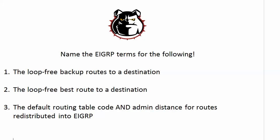Now let's look at these EIGRP terms — we've got to have these two straight, it's EIGRP fundamentals. The loop-free best route to a destination is the successor route. The loop-free backup routes to a destination are the feasible successors, and that's one reason why EIGRP is considered to recover faster from a problem than OSPF — because the backup routes in EIGRP are actually calculated in advance of them actually being needed.